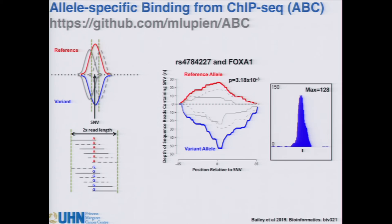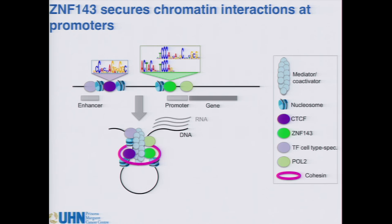Our tool ABC, which calls allele-specific biases from ChIP-seq data, is publicly available. The key take-home is that we now have a better sense of how the machinery defines which promoters interact with which enhancers: ZNF143 is strongly recruited at loop-forming promoters alongside RNA Polymerase II, while CTCF occupies distal sites. Together, ZNF143 and CTCF bookmark regions that establish chromatin loop formation, which should significantly improve our predictions of enhancer-to-gene regulatory connections.